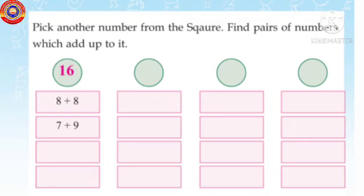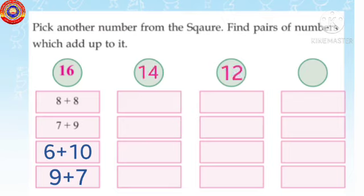Second one: pick other numbers from the square. Find pairs of numbers which add up to it. Which two numbers added together give the sum 16? Yes, 8 plus 8, 7 plus 9, 6 plus 10, and 9 plus 7. Second: 14. Third: 12. Last one: 11. Find the pair of numbers. Do it yourself in the rough book.